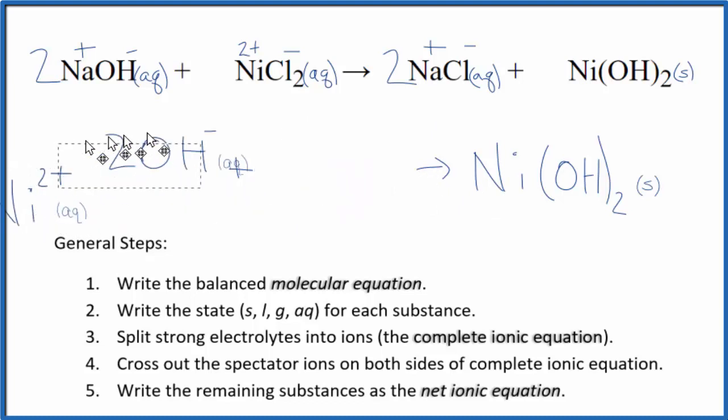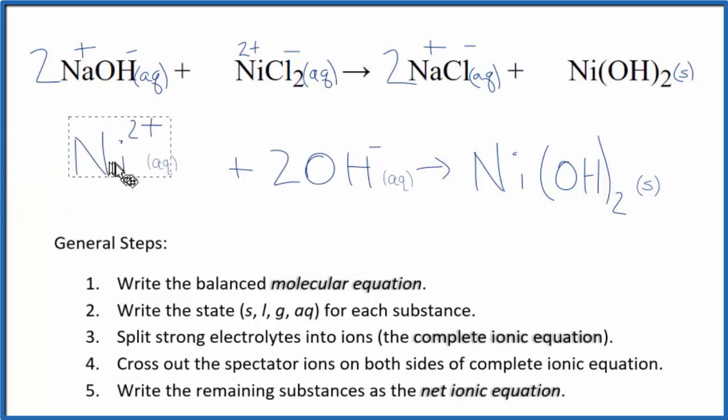Often you'll see the positive ion written first, and the negative ion written second in the net ionic equation. It really doesn't matter. It's the same net ionic equation. This is Dr. B with the balanced equation for sodium hydroxide plus nickel chloride. Thanks for watching.